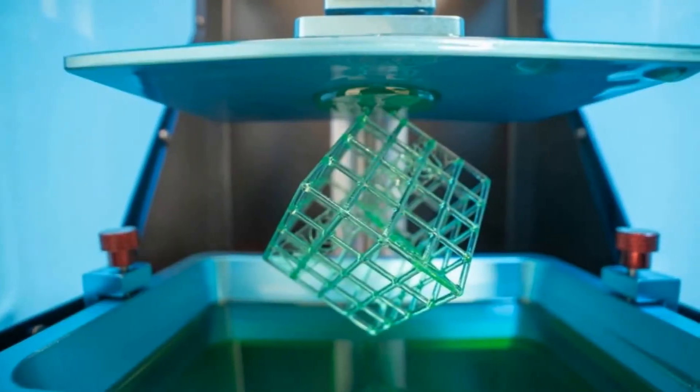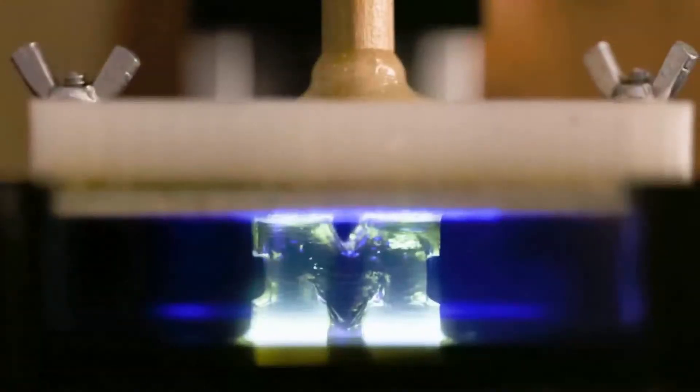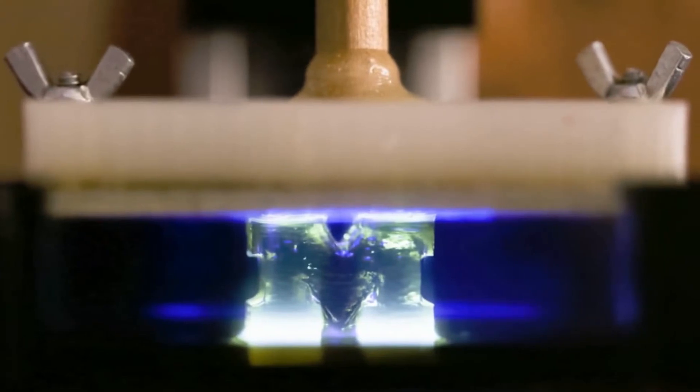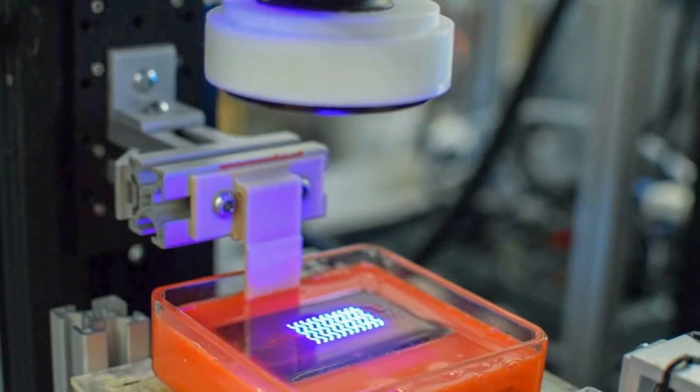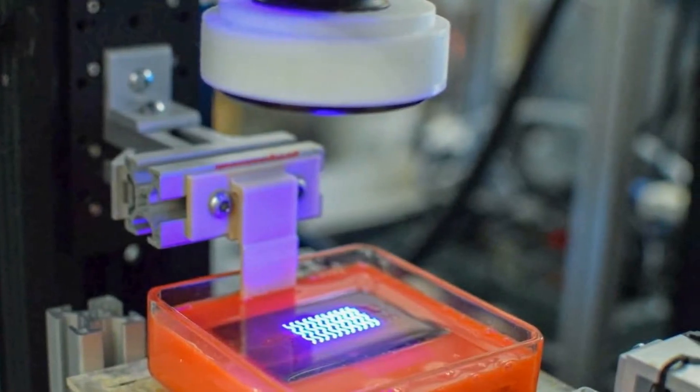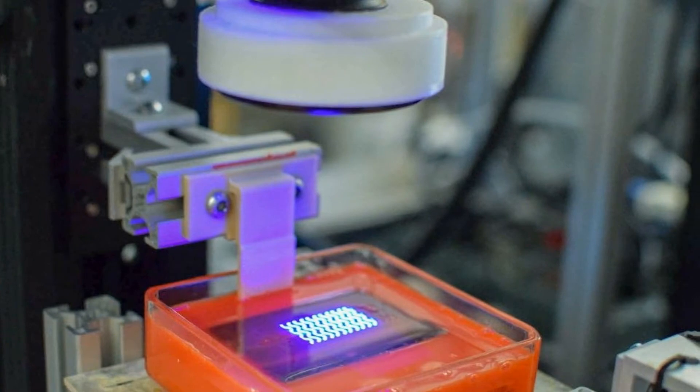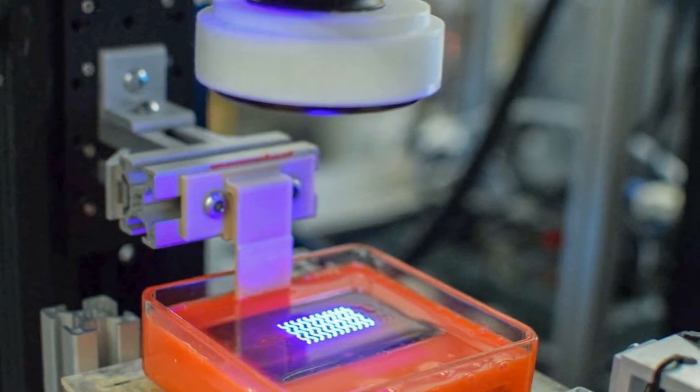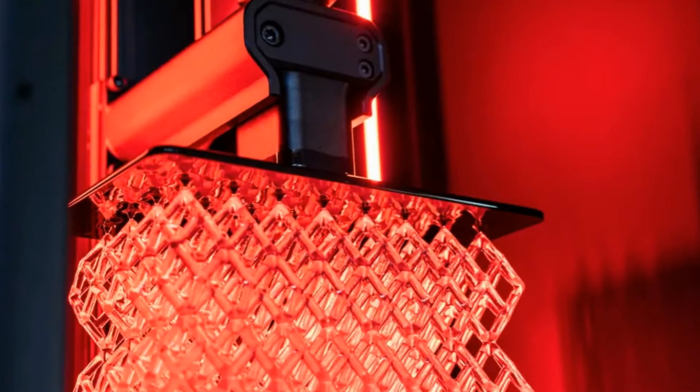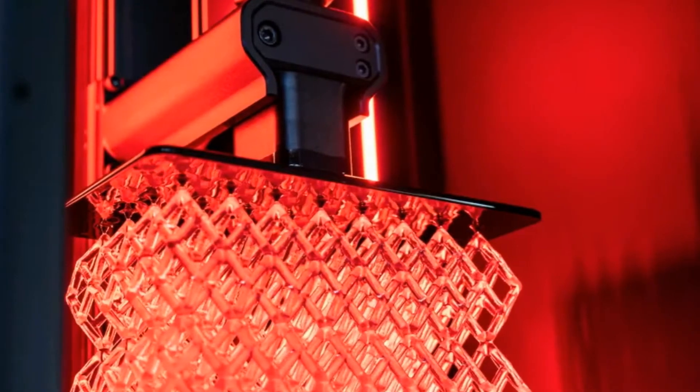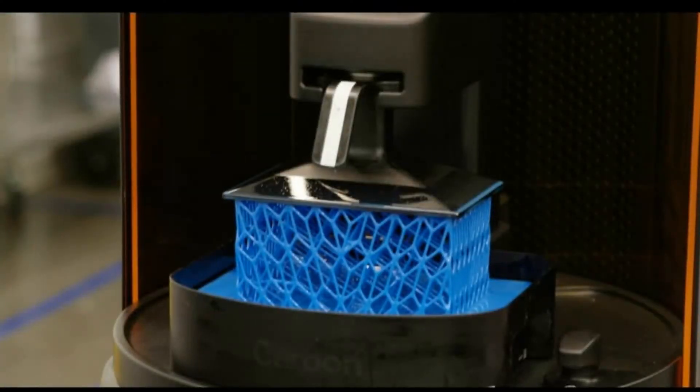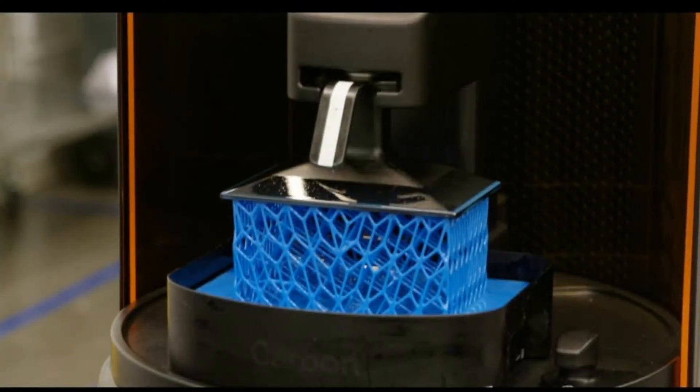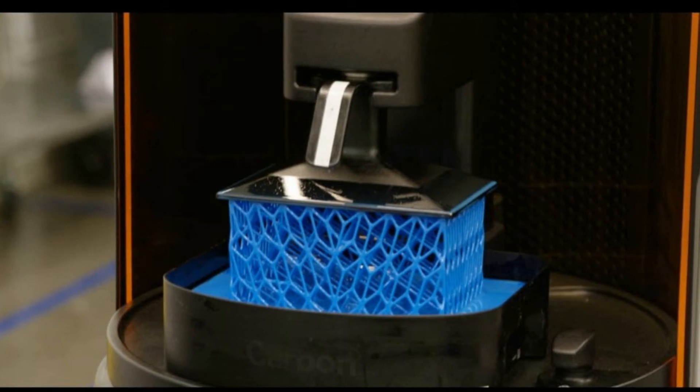Digital light processing is similar to SLA in that it cures liquid resin using light. The primary difference between the two technologies is that DLP uses a digital light projector screen, whereas SLA uses a UV laser. This means DLP 3D printers can image an entire layer of the build all at once, resulting in faster build speeds. While frequently used for rapid prototyping, the higher throughput of DLP printing makes it suitable for low-volume production runs of plastic parts.